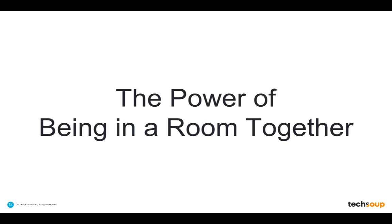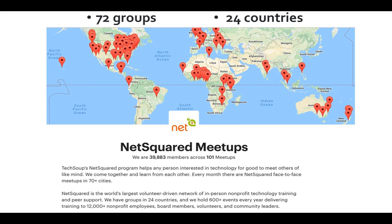TechSoup thinks it's important to get techies together in a room to support each other. We support you through blog posts, forums, e-learning courses, and webinars like this, but we think there is a magic that happens when we get together in a room — certain kinds of conversations you can only have when you are there with someone else. That is why we have this global network of nonprofit technology meetups. There are currently 72 groups in 24 countries, and last year we had about 13,000 nonprofit techies come to our free events.